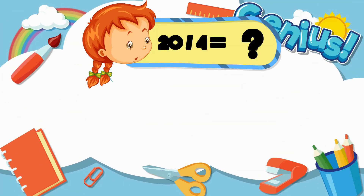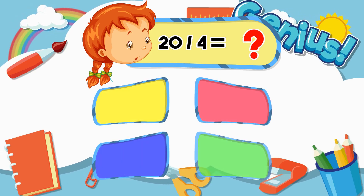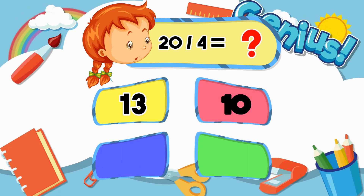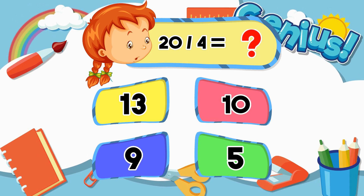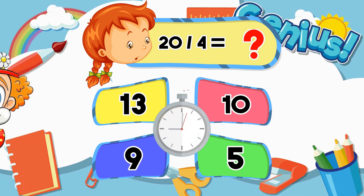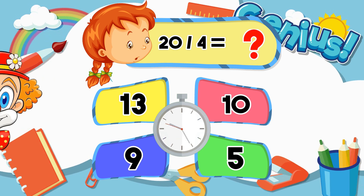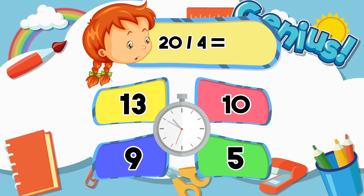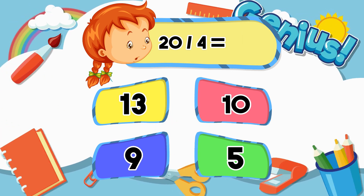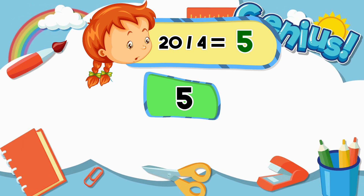What is 20 divided by 4? Options: 13, 10, 9. Answer: 5.